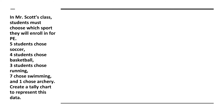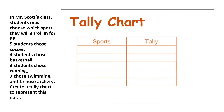Let's make our tally chart. We're going to have the sports on the left and the tally on the right. First we have soccer — five students chose soccer. Next we have basketball — four students chose basketball.